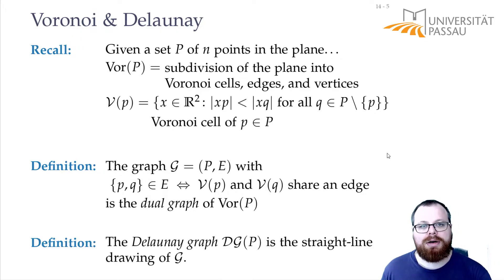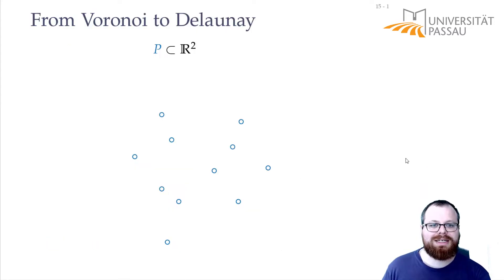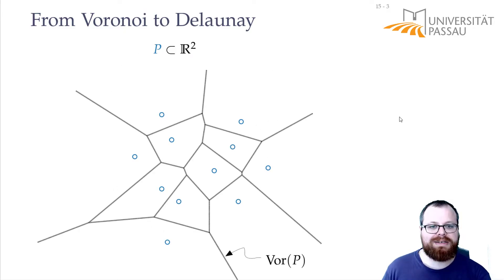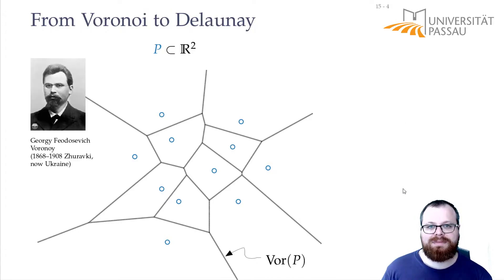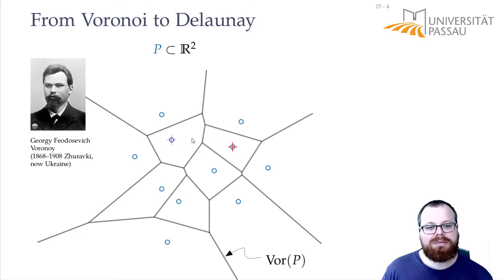The Delaunay graph of a point set is the straight line drawing of this dual graph. Let's have a look at an example. We have our point set and this is our Voronoi diagram of this point set. This is called the Voronoi diagram because it was invented by Georgi Feodosevich Voronoi in Zuravki, which is now in Ukraine. The dual graph is obtained by taking all these points and connecting them if the corresponding cells share an edge.